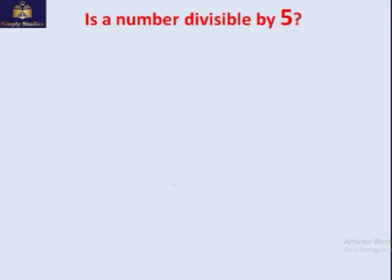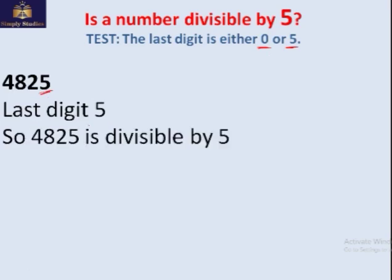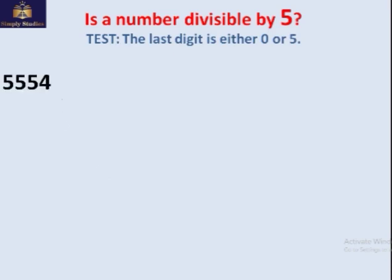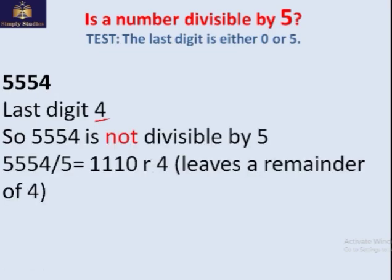Is the number divisible by 5? It's very easy — the last digit should be either 0 or 5. For example, if the last digit is 5, the number is divisible by 5 and there is no remainder when divided. Another number: 5554 — the last digit is 4, which is neither 0 nor 5, so it's not divisible by 5. There is a remainder left.